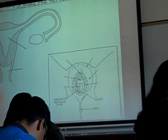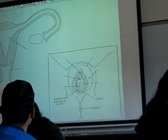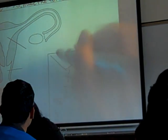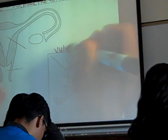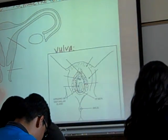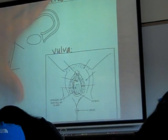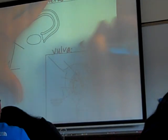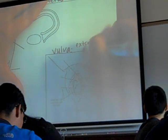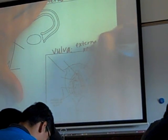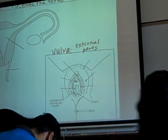So now we get to this structure. This is called the bulb, and the bulb refers to all of the external parts — everything that you can see from the outside.